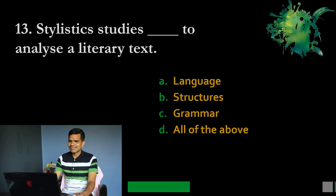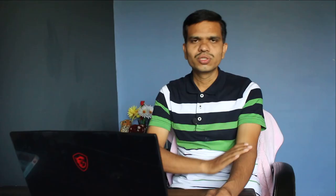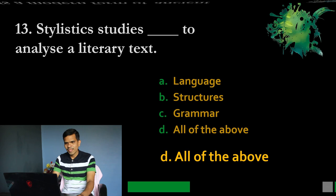Question number 13: Stylistics studies dash to analyze a literary text. Options: A. Language, B. Structure, C. Grammar, D. All of the above. The correct option is D, all of the above. Stylistics is the study of language, grammar, and various structures, and based on this study it analyzes the literary text, considering various facets of language, structure, and grammar.